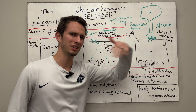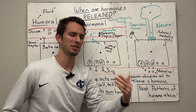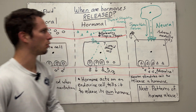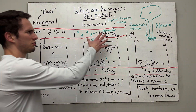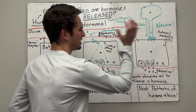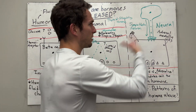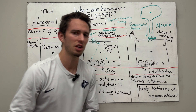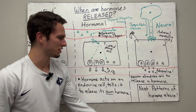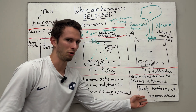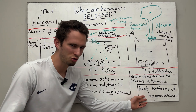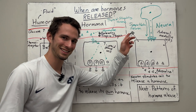Not all of these will release hormones at the same time. As you can tell, the first was triggered by glucose levels, the second by another hormone, and the third by a neuron response. So the question is: what types of patterns do we have for hormone release? We're going to address that next.